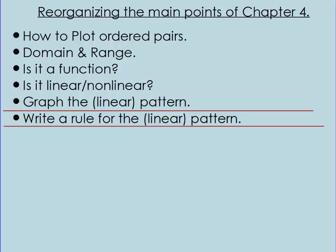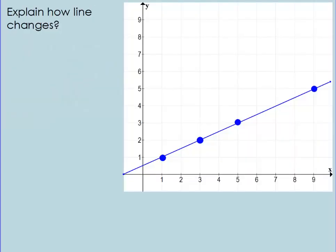So this is Part 3. I reorganized Chapter 4, and in Parts 1 and 2 we covered a lot of the earlier material. Part 3 is the last part, and we want to write a rule for the linear pattern. We talked a little bit about this in class — I just want to formalize it. Last week we looked at a linear function, a bunch of dots, and we explained how the line changes.